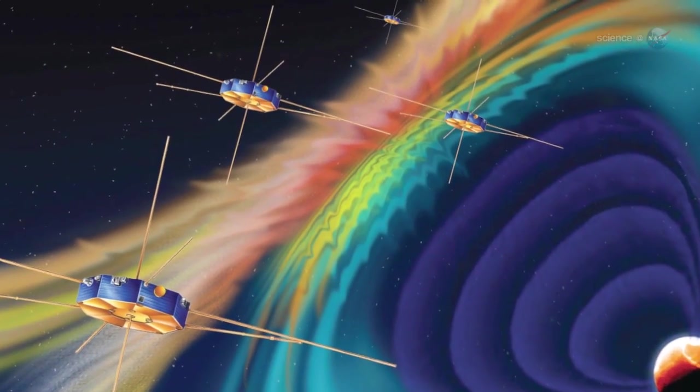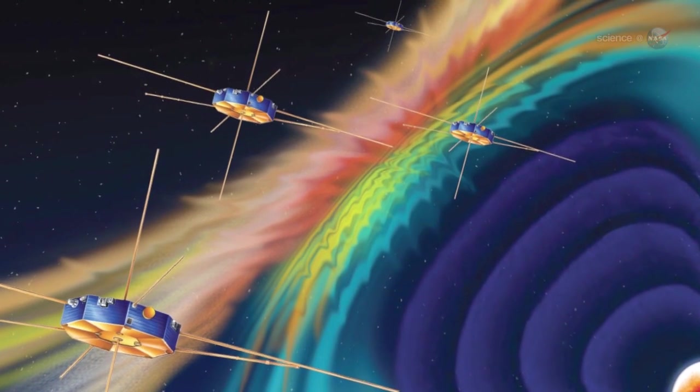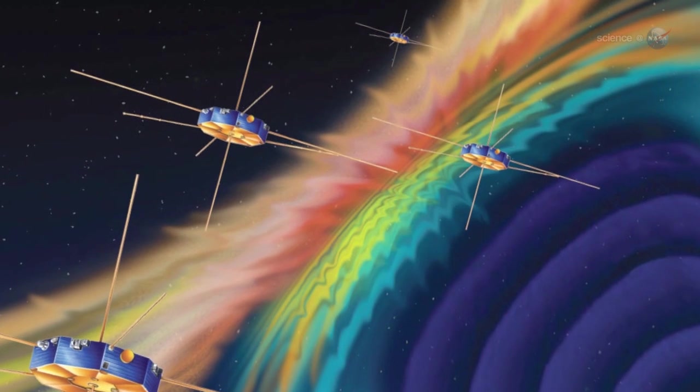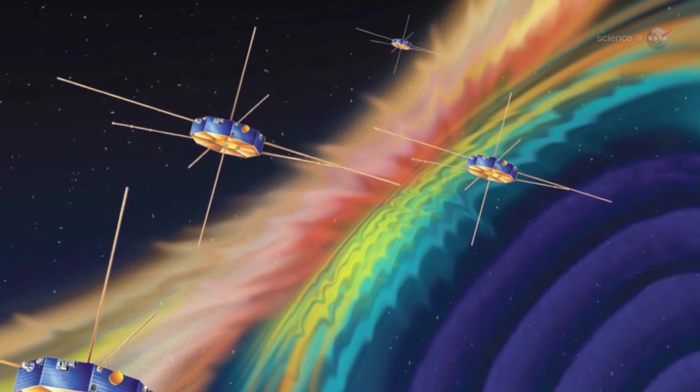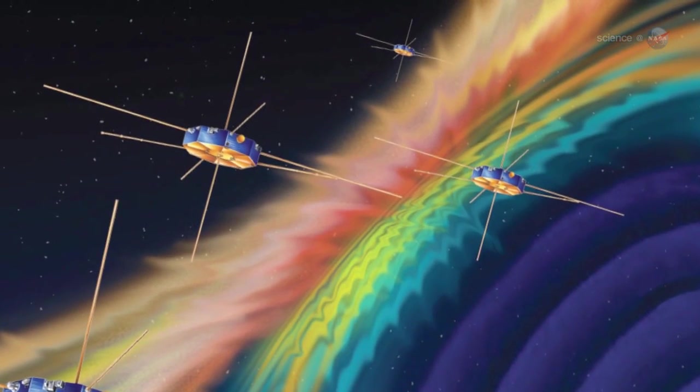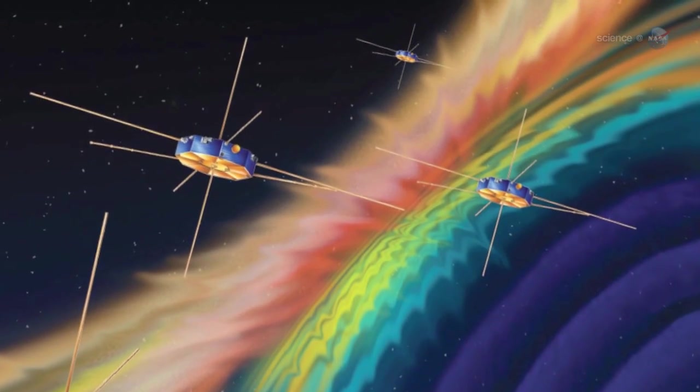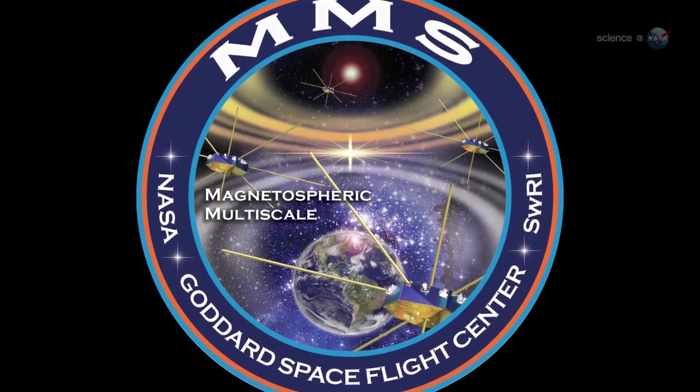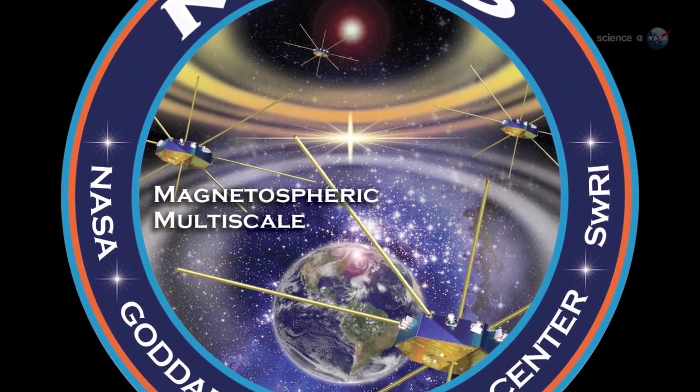This means that a single member of the MMS constellation, using the diagnostics, can find a portal and alert other members of the constellation. Mission planners long thought that MMS might have to spend a year or so learning to find portals before it could study them. Scudder's work shortcuts the process, allowing MMS to get to work without delay.